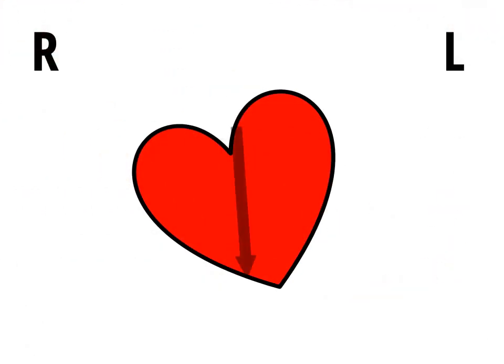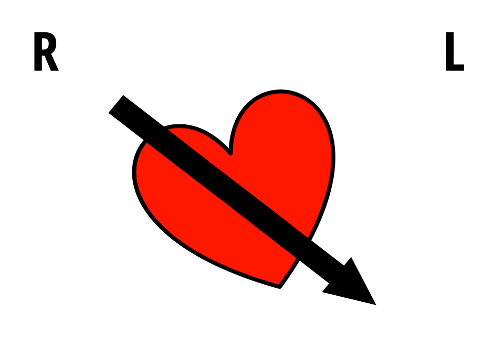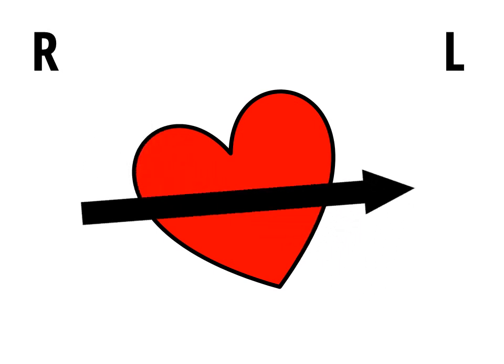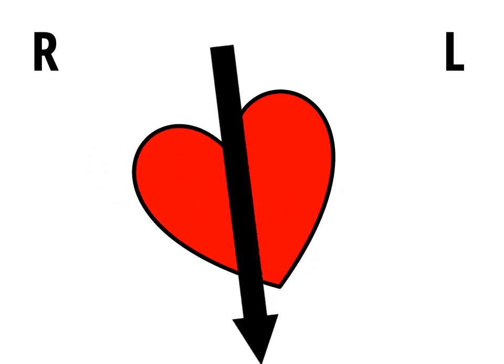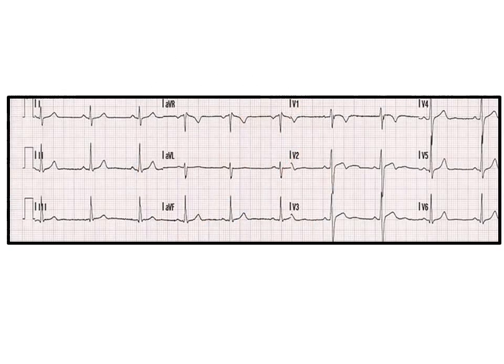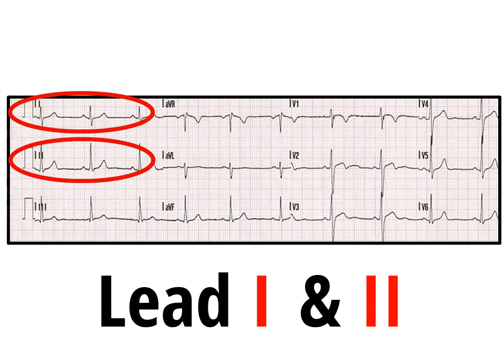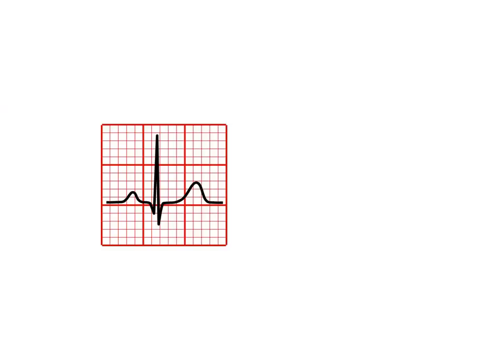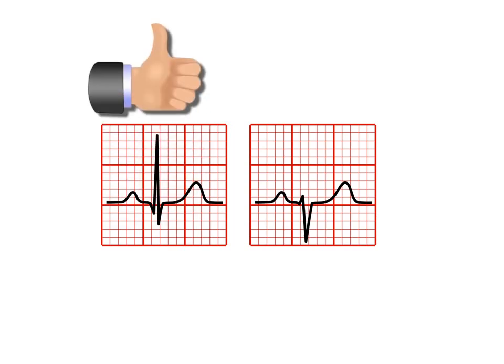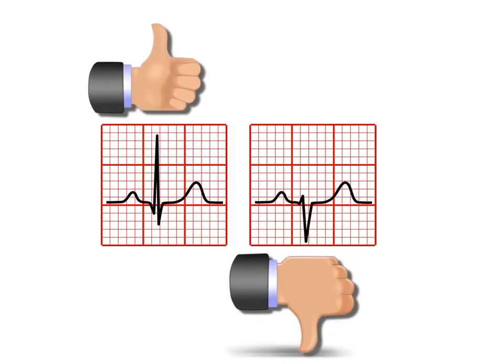The cardiac axis is the overall direction of ventricular depolarisation. Sometimes the axis is normal, too far to the left, or too far to the right. You can work it out really simply by finding leads 1 and 2 and deciding if these leads are positive or negative. Use your thumbs — put a thumb up for a positive lead or down for a negative.